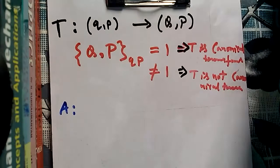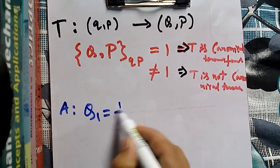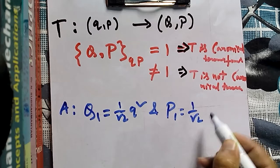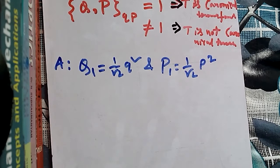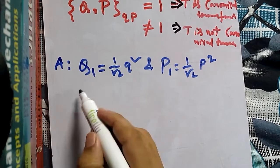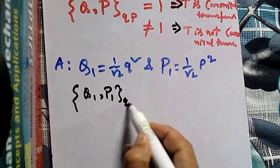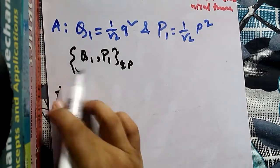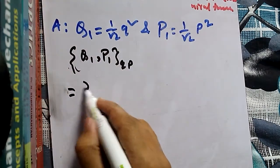The first transformation A is: capital Q1 equals 1 by root 2 times small q squared, and capital P1 equals 1 by root 2 times small p squared. For this transformation to be canonical, the condition is that the Poisson bracket of capital Q1 and capital P1 with respect to small q, small p should be equal to 1. We will check whether it equals 1 or not.